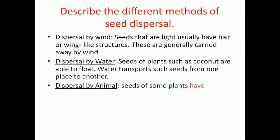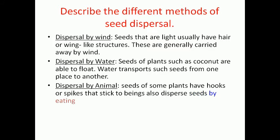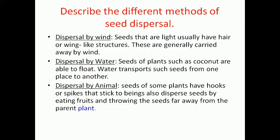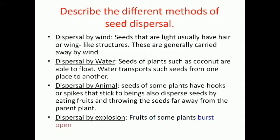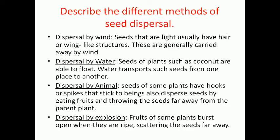Dispersal by animals: seeds of some plants have hooks or spikes that stick to beings, and animals disperse seeds by eating fruits and throwing the seeds far away from the parent plant. Dispersal by explosion: fruits of some plants burst open when they are ripe, scattering the seeds far away. So the four methods are dispersal by wind, water, animals, and explosion.